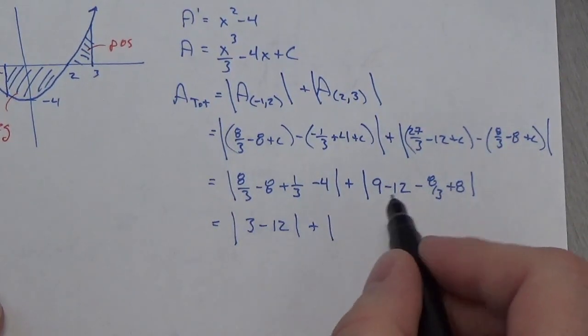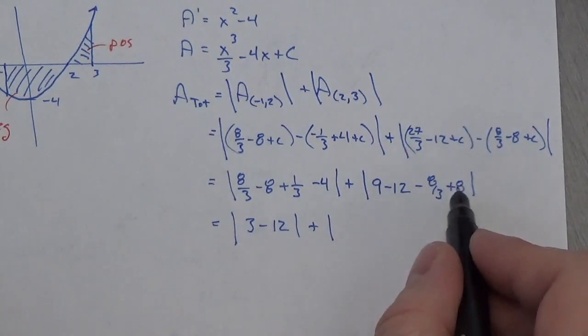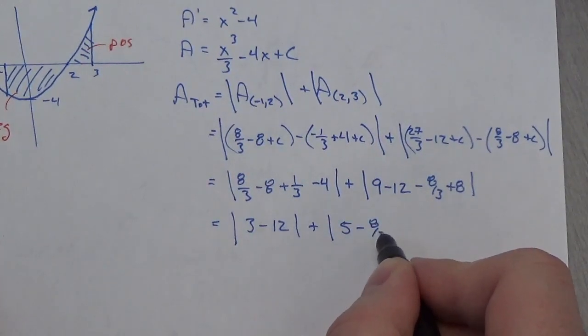plus, now over here, this is going to be, what do we got here? 9 plus 8 is going to be 17, minus 12 is going to be 5, minus 8 thirds.